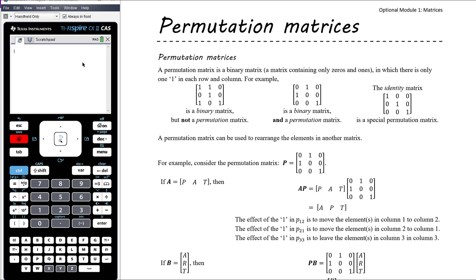For example, the first matrix is a binary matrix — we only have zeros and ones — but it's not a permutation matrix. Because in each row there are two ones, so it's binary but not a permutation matrix.